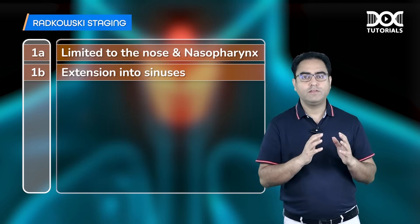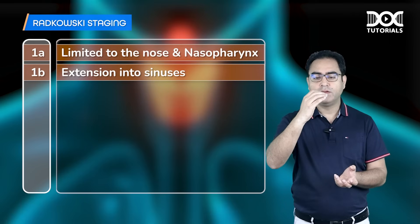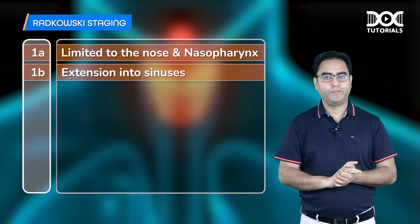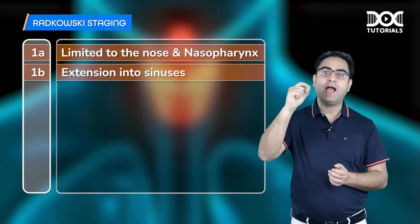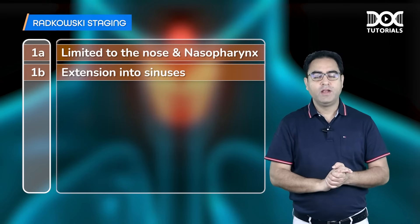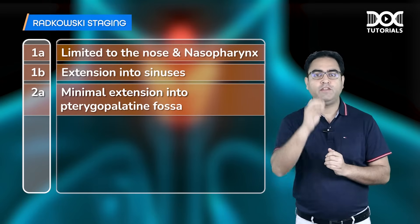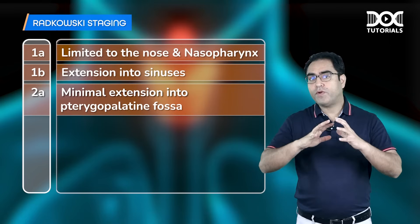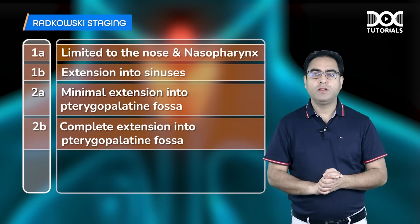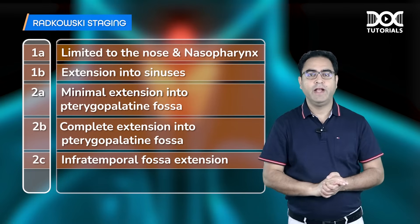Stage 2 has three sub-stages. If the tumor minimally invades the pterygopalatine fossa behind the maxilla, it is stage 2A. If the tumor frankly occupies the pterygopalatine fossa, it is stage 2B. If the tumor grows into the infratemporal fossa toward the cheek area, it is stage 2C.